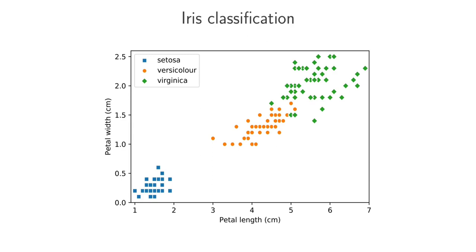But on this plot, we're just looking at the petal length and the petal width. So the petal length could maybe be our first feature, x1, and the petal width can maybe be our second feature, x2.